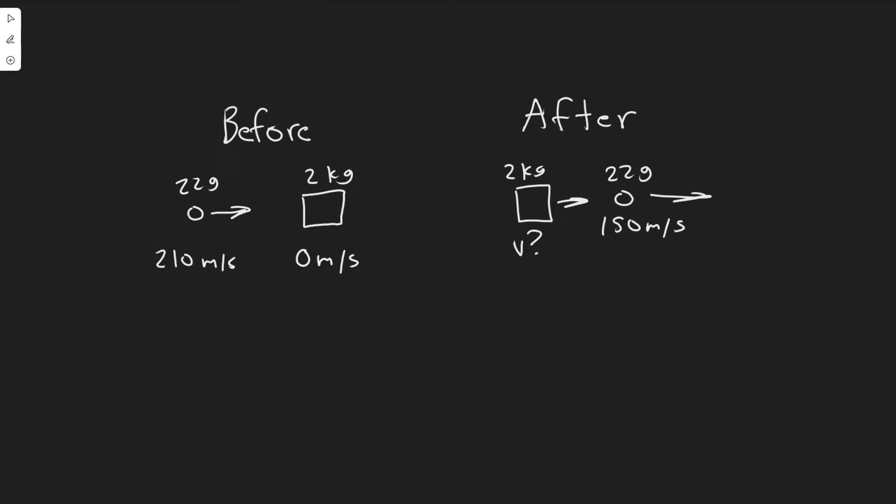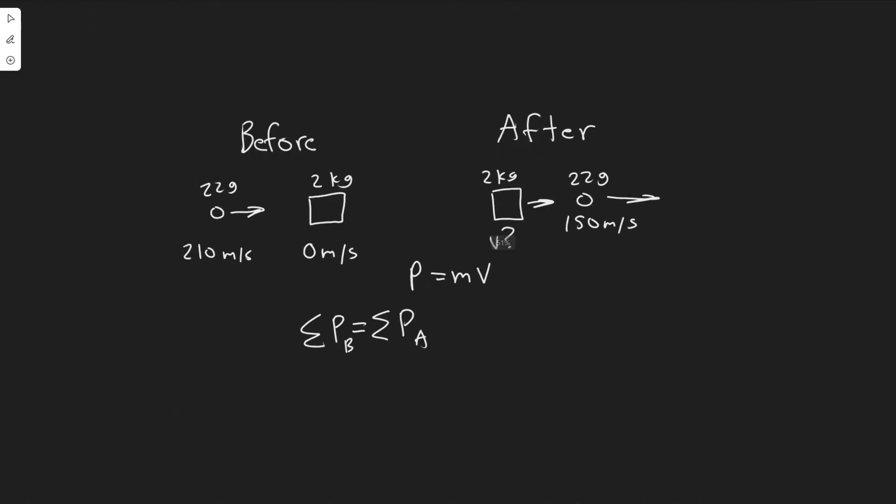And so the way we're going to solve this is by using momentum. And so if you don't know the formula for momentum, it's P momentum equals mass times velocity. And so we're going to use the conservation of momentum to solve this, which is basically the momentum before has to be equal to the momentum after, or the sum of the momentum. So this could be before and then some of the momentum after. You could say initial and final. It doesn't really matter how you write it. But yeah, so basically we've got to add up the momentum here of each object and then the momentum after. So let's go ahead and do that.